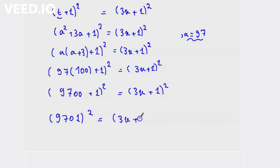So (9701)² equals (3x + 1)². Now we need to cancel squares but we should be careful, because if a² equals b², then a equals plus or minus b. So here 3x + 1 equal to plus or minus 9701, so we have two solutions. Now let's split these two solutions.